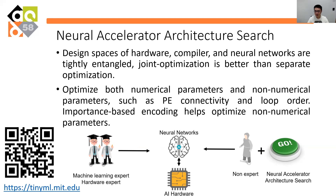To sum up, the design spaces of hardware, compiler, and neural networks are tightly entangled, and joint optimization is better than separate optimization. We should optimize both numerical parameters and non-numerical parameters such as PE connectivity and loop order. Importance-based encoding helps optimize non-numerical parameters. Our NAAS offers a one-button solution to co-designing the neural networks, accelerator hardware, and mapping strategies. For more information, please visit our website at tinyml.mit.edu. Thank you so much for listening.